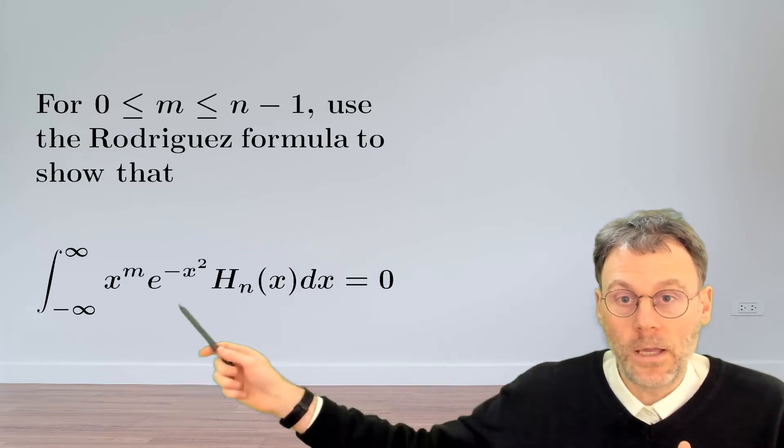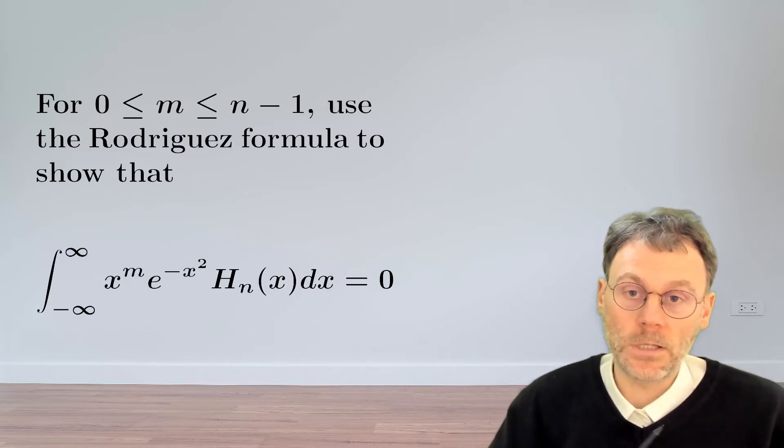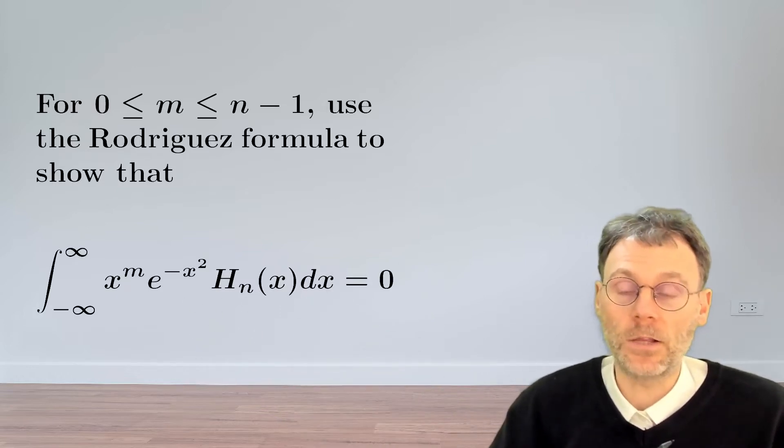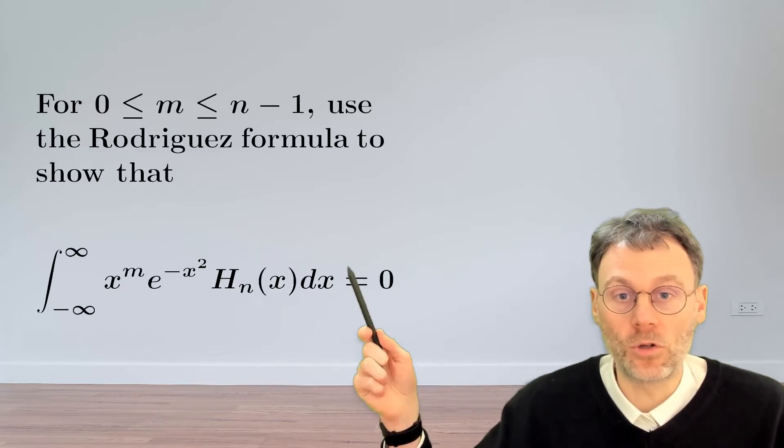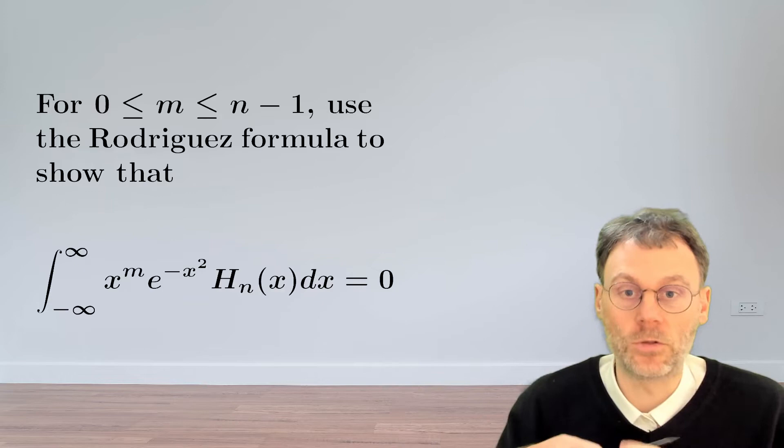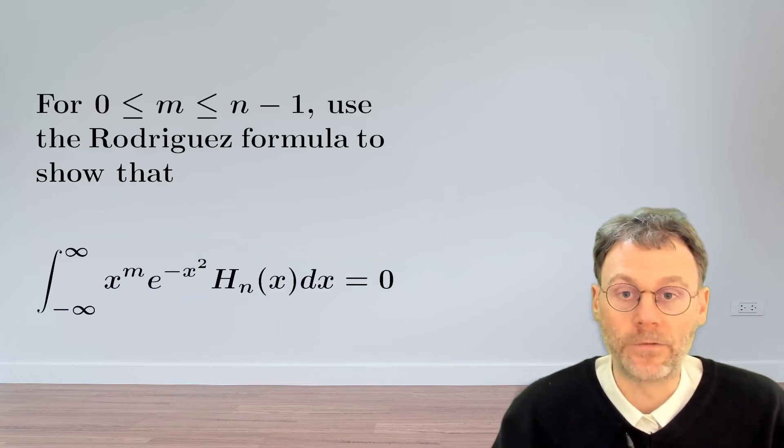A rather nasty looking integral involving Hermite polynomials here. The question is, can you use the Rodriguez representation of the Hermite polynomials to show that this integral reduces to zero? Pause the video and have a go.